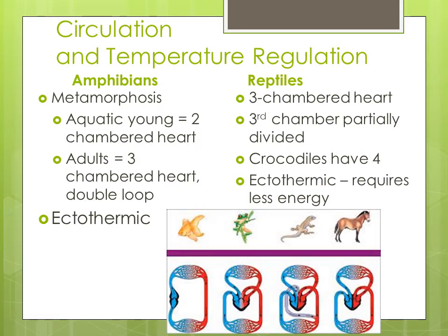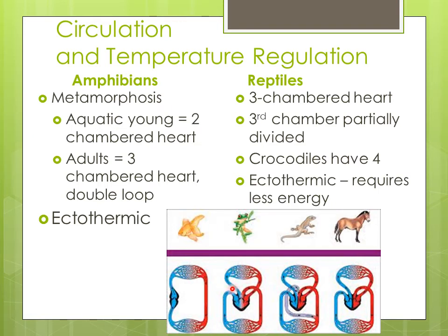For circulation, amphibians go through metamorphosis from an aquatic young to an adult that's at least partially terrestrial. The young can have a two-chambered heart like fish — not very efficient, but it works in water. Moving to land, there is a three-chambered heart to pump blood all the way through the body. It's a double loop: blood goes out to the lungs, back to the heart, then out to the body, and back to the heart. With fish and tadpoles there's just a single loop.